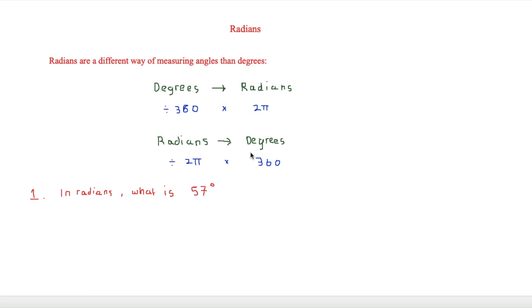In this video we are looking at radians. Radians are just a different way of measuring angles than degrees. We need to look at how to convert degrees into radians and also how to convert radians into degrees.